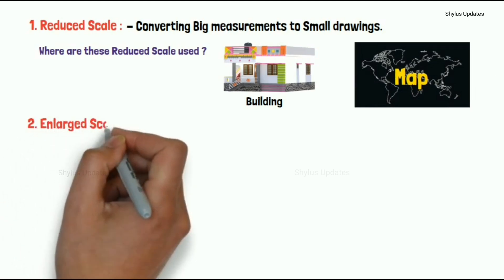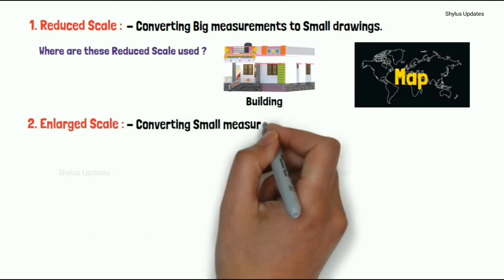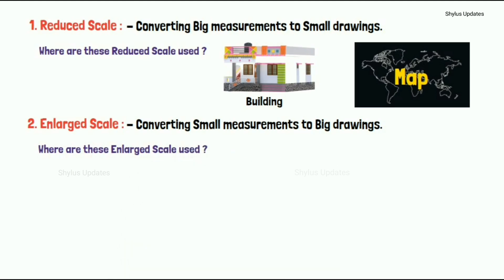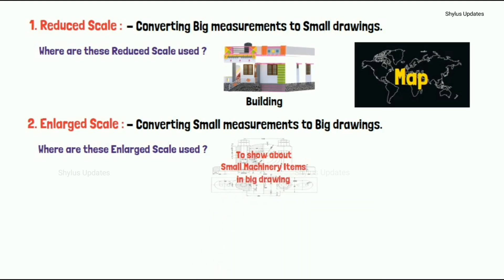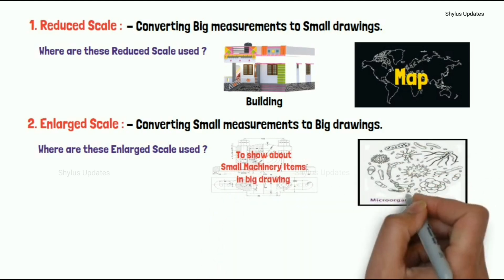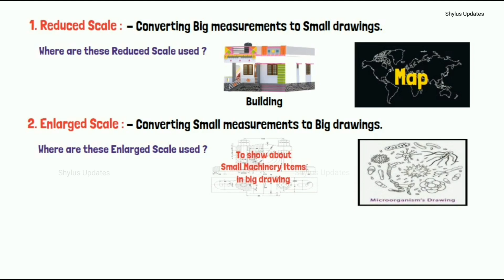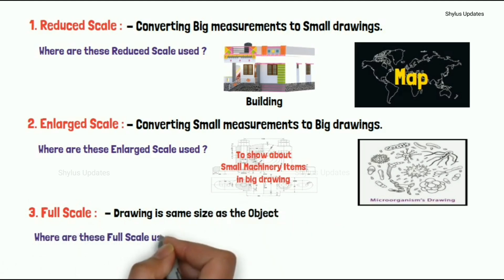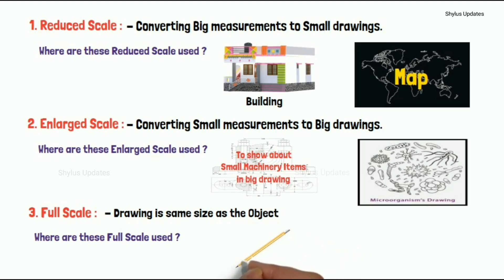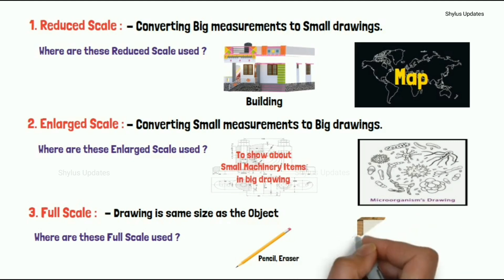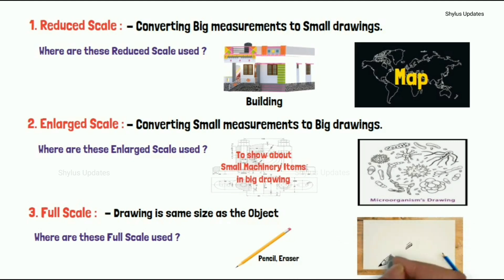Enlarged scale means converting small measurements to big drawings. It is used to show small machinery items in big drawings, and also to show microorganisms in big drawings. The third type is full scale, which means the drawing is the same size as the drawn object. Full scale can be used to draw small objects like pencils or erasers — since they are small, there is no need to change the dimension of the original object, and they can definitely be accommodated on a drawing sheet.